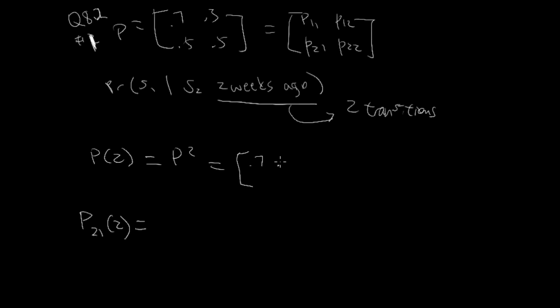We take p times itself. Here we have 0.49 plus 0.15, which is 0.64. This is going to be 0.36.